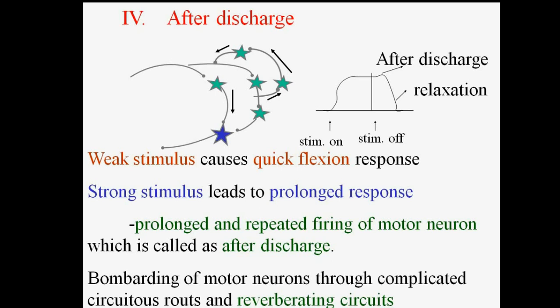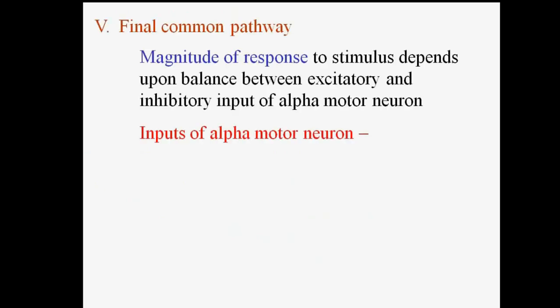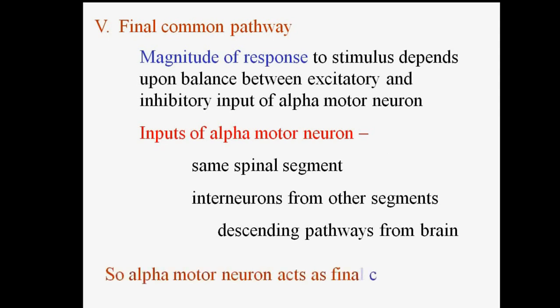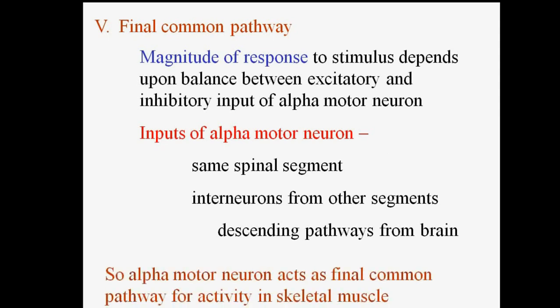After discharge involves bombarding of motor neurons through complicated circuitous routes and reverberating circuits. The next property is final common pathway: the magnitude of response to a stimulus depends upon the balance between excitatory and inhibitory input of alpha motor neurons. Inputs come from spinal cord interneurons, other segments, and descending pathways from the brain, so alpha motor neurons act as the final common pathway for activity in skeletal muscle.